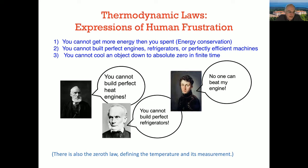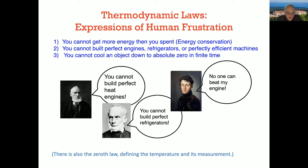The first law tells us there is no free lunch — you have to spend some energy to get useful energy out. The second law is more interesting: it tells us the efficiency bounds of these machines, the cost and gain relations in this energy trade-off. The third law is more technical — it's about how far we can cool down an object in practice. Interestingly, all these answers are negative, and they give the feeling that we are quite limited in building our machines. Some people say these laws are expressions of human frustration.